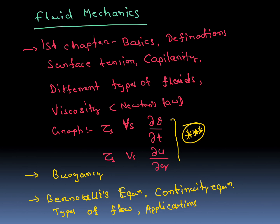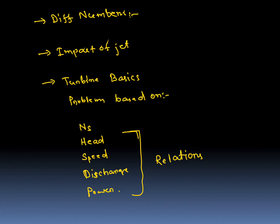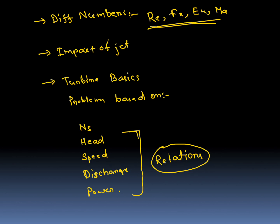Also in Fluid Mechanics: buoyancy and Archimedes principle. Bernoulli's equation and its applications and assumptions are very very important. Continuity equation, types of flow, and dimensionless numbers — Reynolds number, Prandtl number, Euler number, Mach number — theory and problems both are asked. Then impact of jet basics, turbine basics with velocity triangle, specific speed, head, speed, discharge, and power relations for same and similar turbines, prototype and model relations.